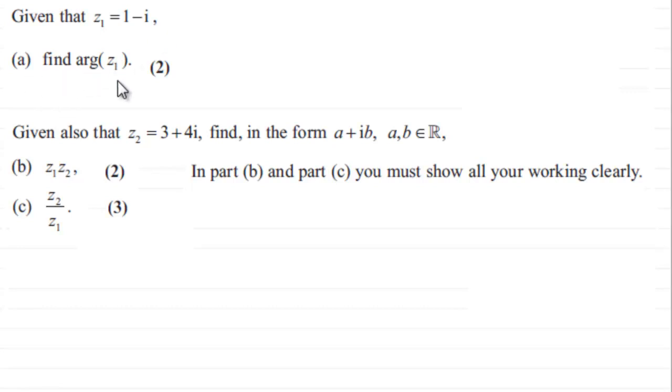Next part, we're given also that z₂ equals 3 plus 4i and asked to find in the form a plus ib, where a and b are real numbers, z₁ times z₂ and z₂ divided by z₁.